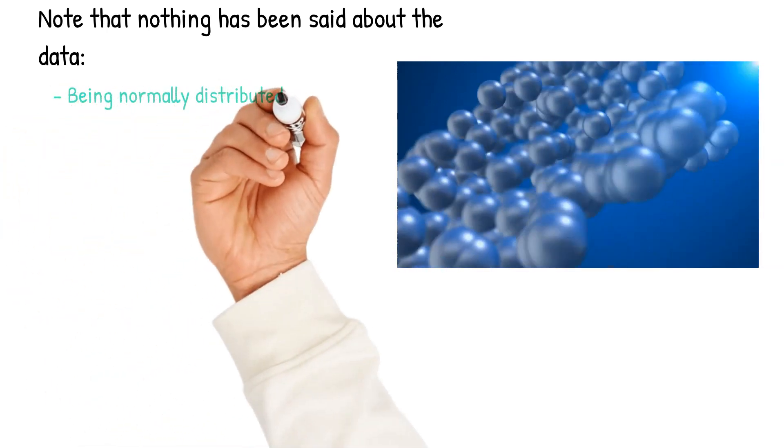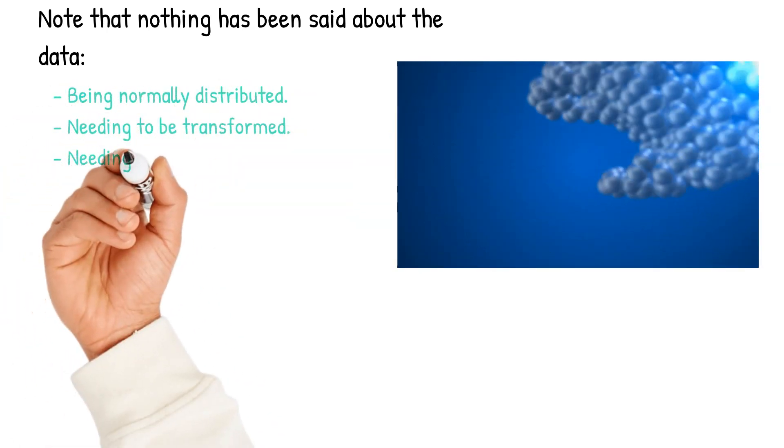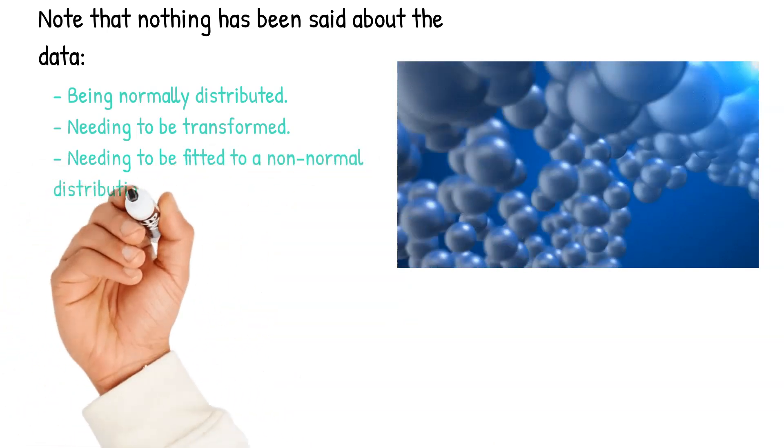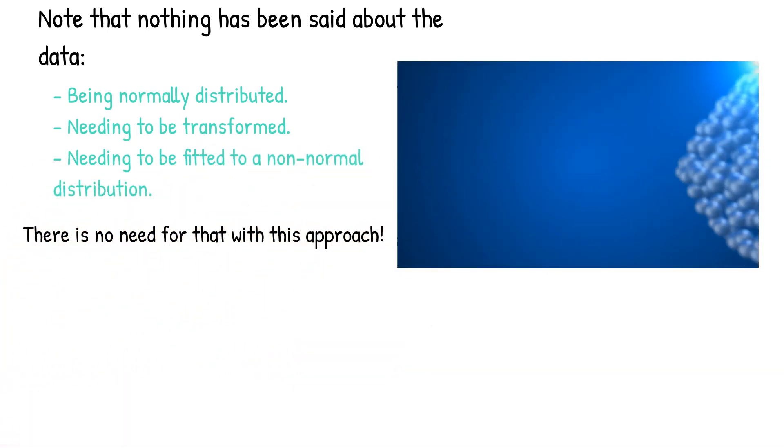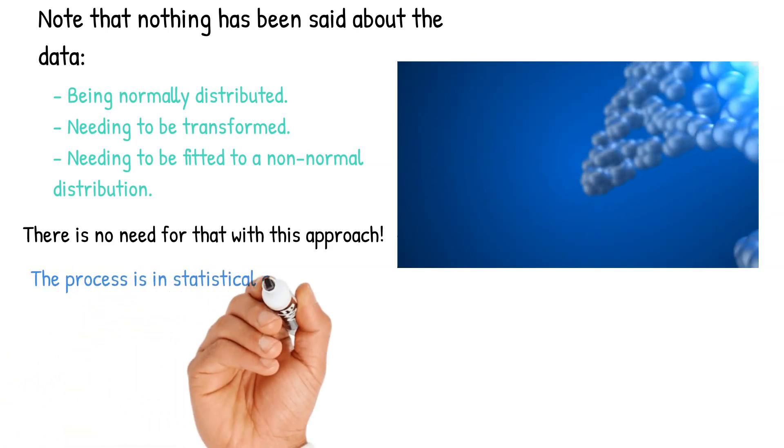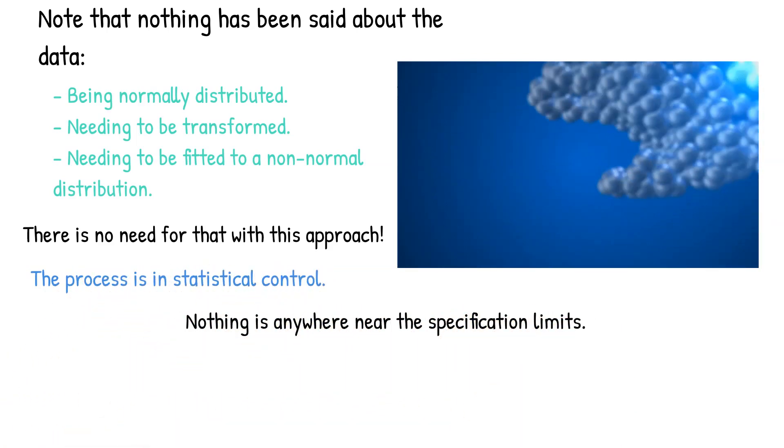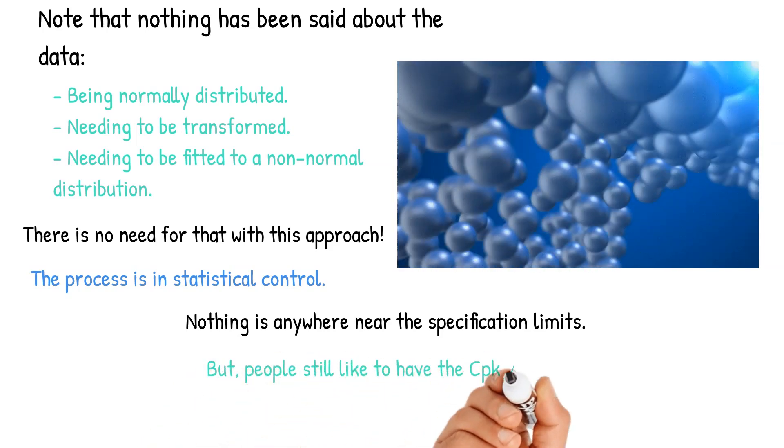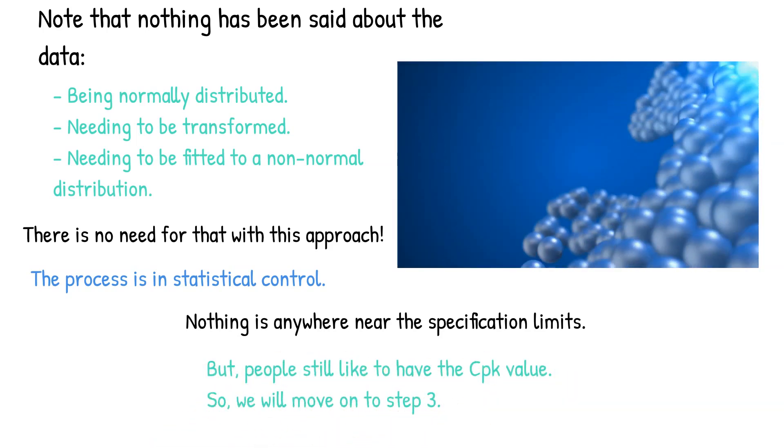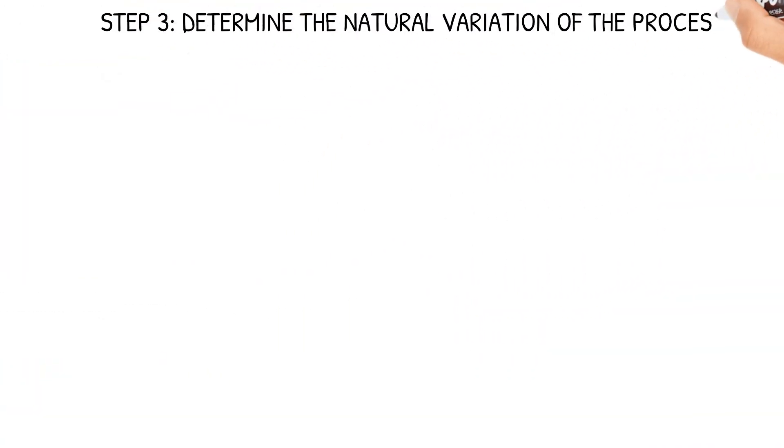Now note, nothing's been said about the data at all in terms of having to be normally distributed, needing to be transformed, or fitted to a non-normal distribution. The approach in these first couple steps, we don't need that. It doesn't matter. If a process is in control and nothing is anywhere near the specification limits on the histogram, the process is capable. But people still like to have a CPK value, so we're going to move on to step three.